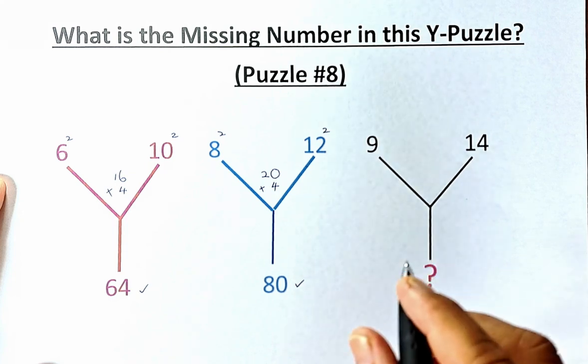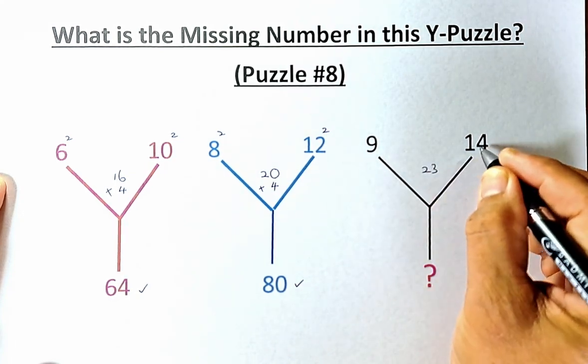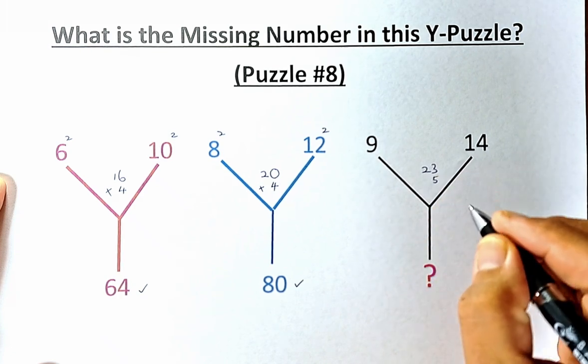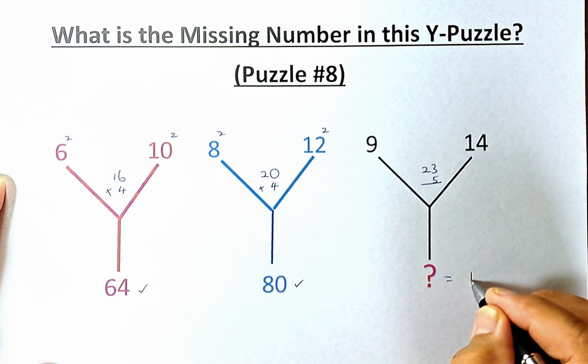So similarly, for our last Y, 9 plus 14 is 23. 14 minus 9 is 5. And then when you multiply 23 by 5, that gives you 115.